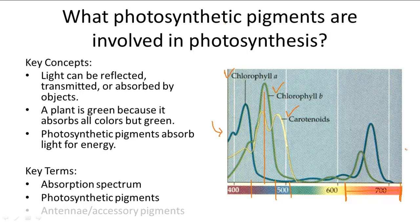Only the green pigment chlorophyll A actually participates directly in the light reactions. The other two — chlorophyll B and carotenoids — are known as accessory pigments or antenna pigments, because they assist photosynthesis by capturing light energy and passing it over to chlorophyll A. In this way, the pigments work together to generate energy for initiating photosynthesis.